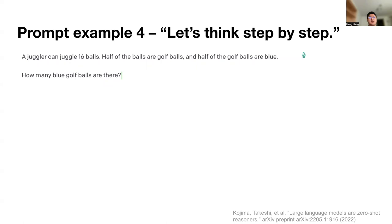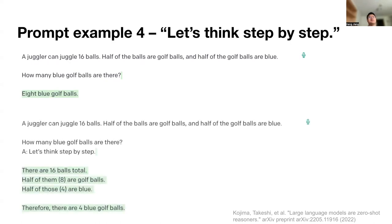If we give the model a relatively complex task, like a math task — 'A juggler can juggle 16 balls. Half of them are golf balls. Half of the golf balls are blue. How many blue golf balls are there?' — if you just ask the model the question, it gives you the wrong answer: eight blue golf balls. However, if you just add the magic phrase 'let's think step by step,' the model breaks it down: half of the 16 balls are 8 golf balls, and half of those 8 are blue, so there are four blue golf balls.